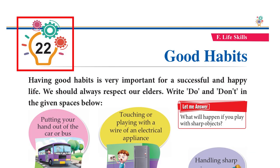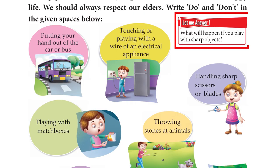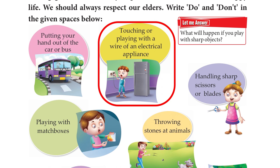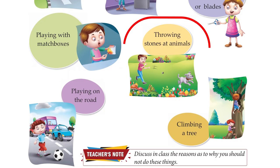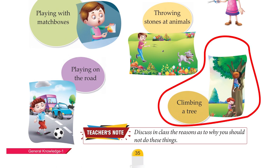Chapter 22: Good Habits. Having good habits is very important for a successful and happy life. We should always respect our elders. Write 'do' and 'don't' in the given spaces: putting your hand out of the car or bus — don't; touching or playing with a wire of an electrical appliance — don't; handling sharp scissors or blades — don't; playing with matchboxes — don't; throwing stones at animals — don't; playing on the road — don't; climbing a tree — don't.